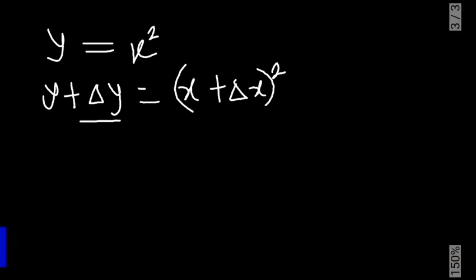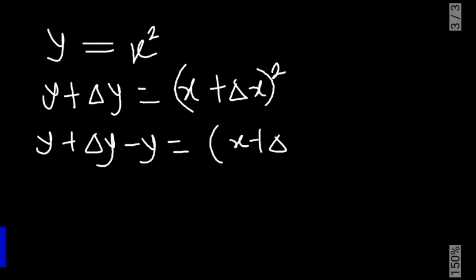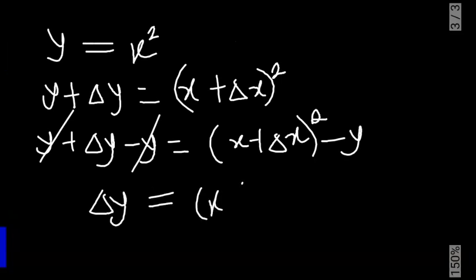Let's make change in y the subject of formula. So we have y plus Δy minus y is equal to (x plus Δx) squared minus y also. So this is eliminated. y minus y is zero. So we have Δy is equal to (x plus Δx) squared minus y. y is equal to x squared. So we can substitute that here.